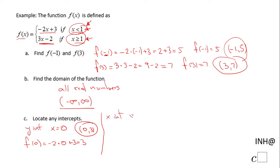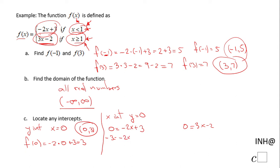For the x-intercept, we set the function equal to 0. For the first piece we solve 0 = -2x + 3. Subtracting 3 gives -3 = -2x, and dividing by -2 gives x = 3/2. However, 3/2 is not less than 1, so it does not belong to the first piece and is not a valid x-intercept.